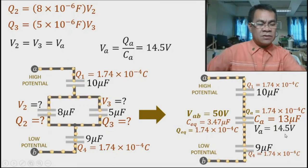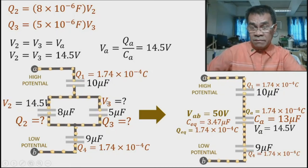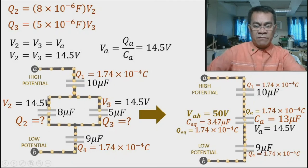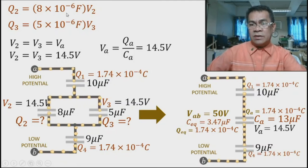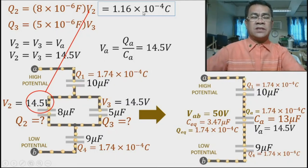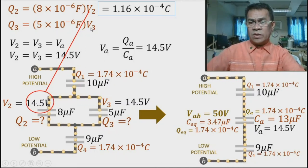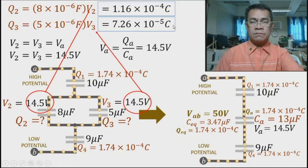Q2 = C2 × V2 = 8 × 10⁻⁶ × 14.5 = 1.16 × 10⁻⁴ coulombs. Q3 = C3 × V3 = 5 × 10⁻⁶ × 14.5 = 7.26 × 10⁻⁵ coulombs. These are the final answers for letter C.